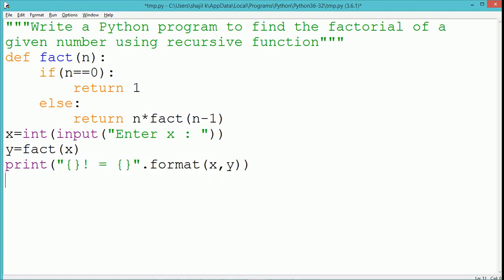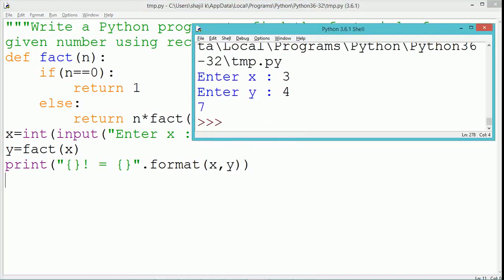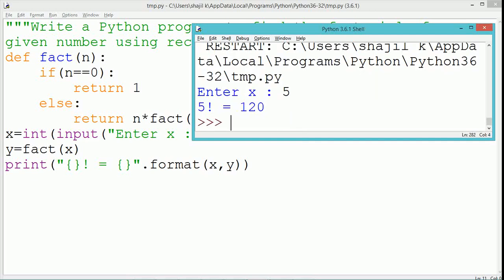The print method is used to display the value of both x and y. Two placeholders are used. The first placeholder will be replaced by the value of x and the second placeholder, represented by two curly braces, will get replaced by the value of y.